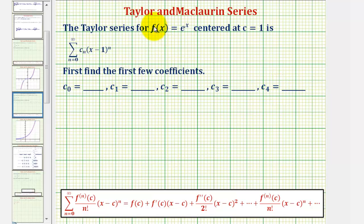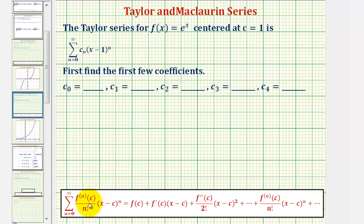The Taylor series is equal to the summation from n equals zero to infinity of the nth derivative of f, evaluated at c, where it's centered, divided by n factorial, times the quantity x minus c, raised to the power of n.